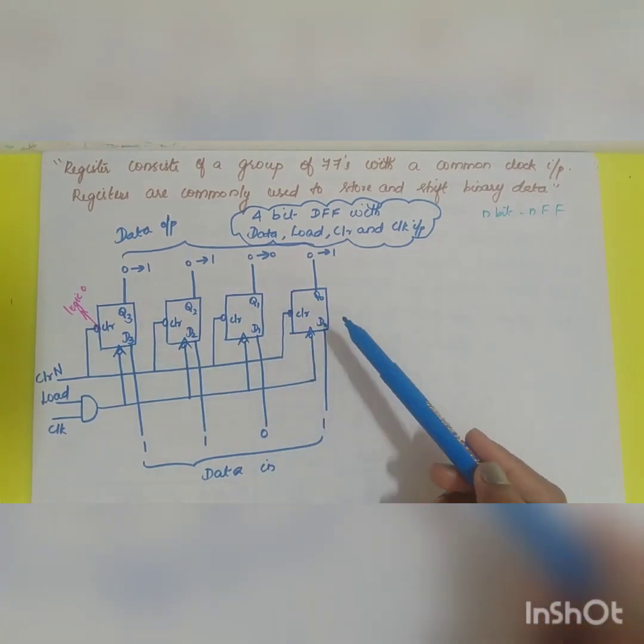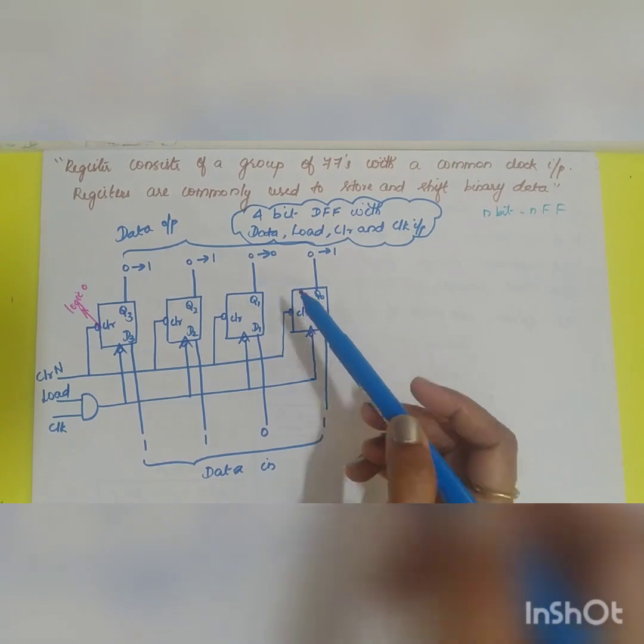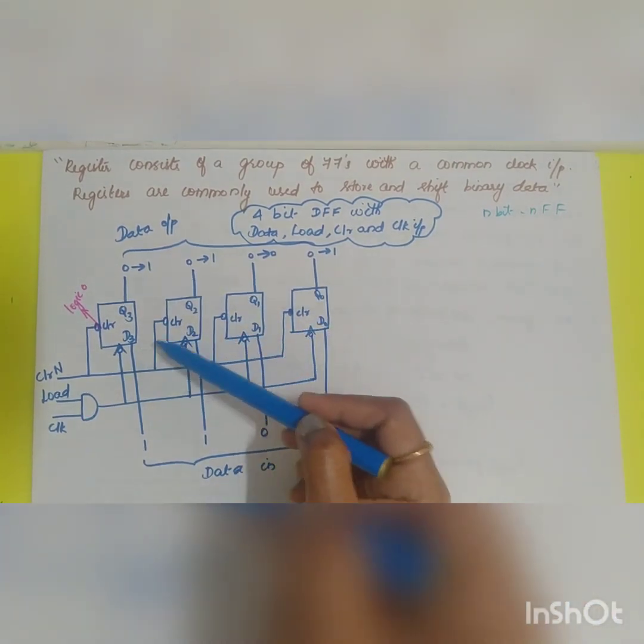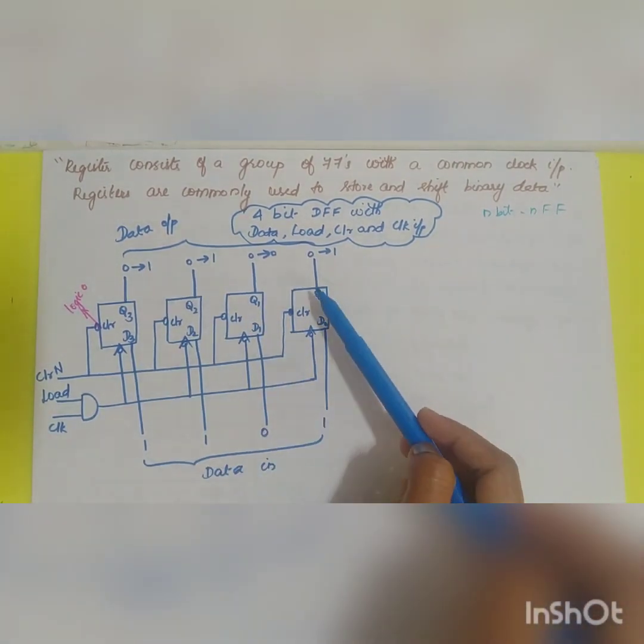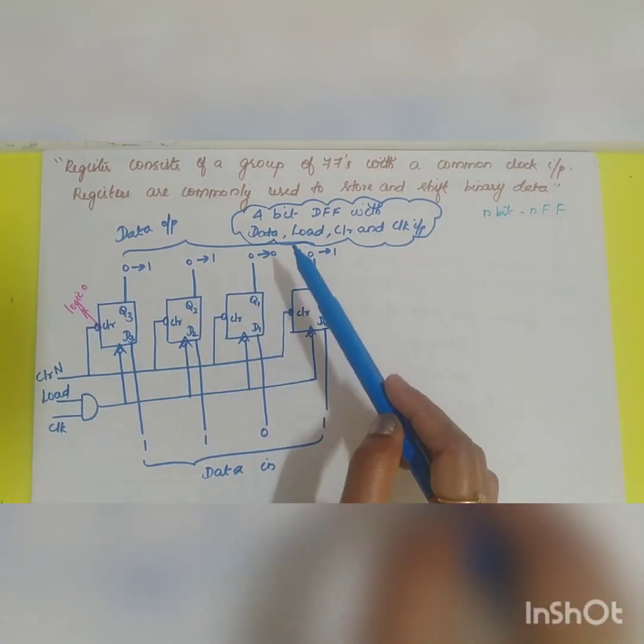D flip-flop. I have taken flip-flop 1, 2, 3, 4. So D0, D1, D2, D3 are the data inputs and Q0, Q1, Q2, Q3 are the output data.